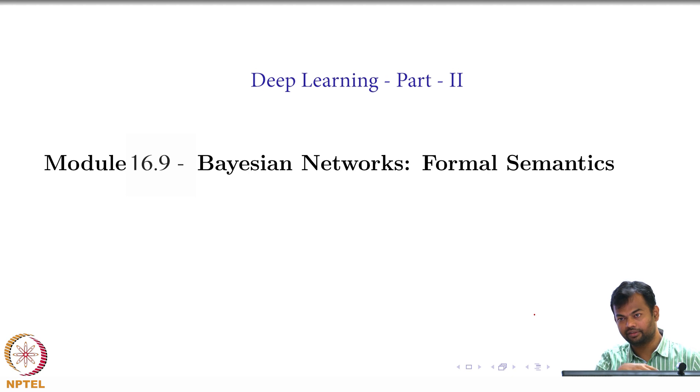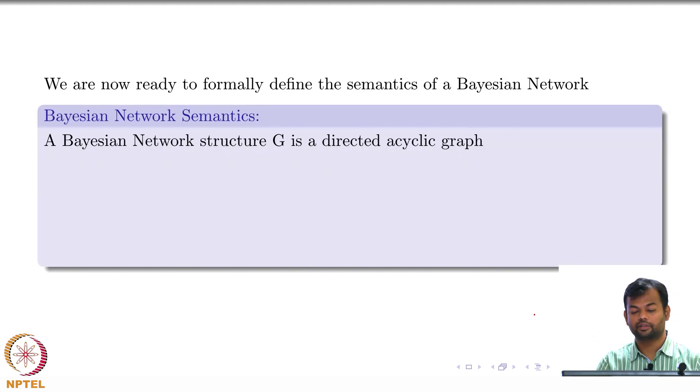So now, having done these three rules through some examples, I will formally define the semantics of a Bayesian network. It will just be one single rule which encompasses all of this. So let us look at this.